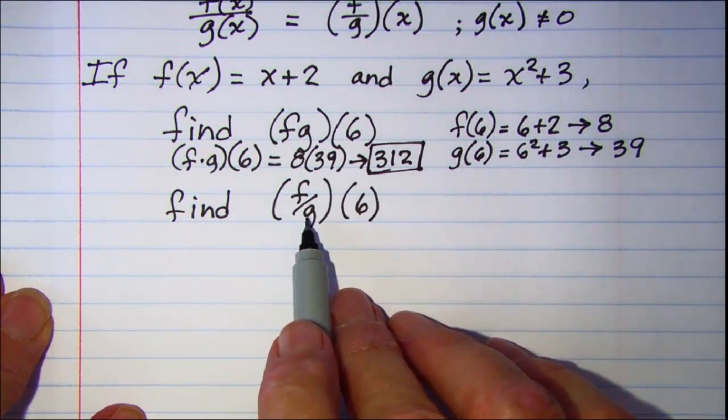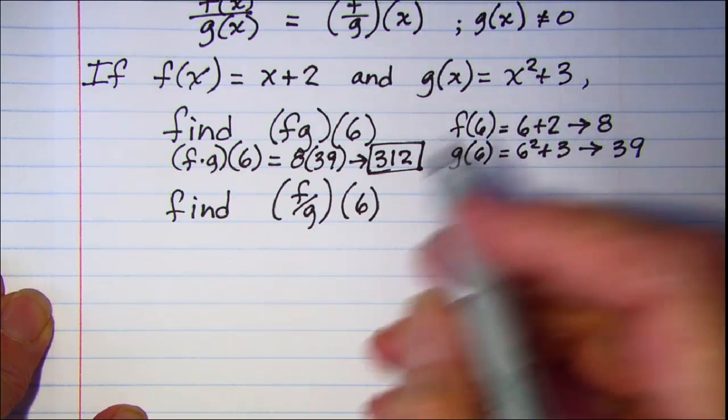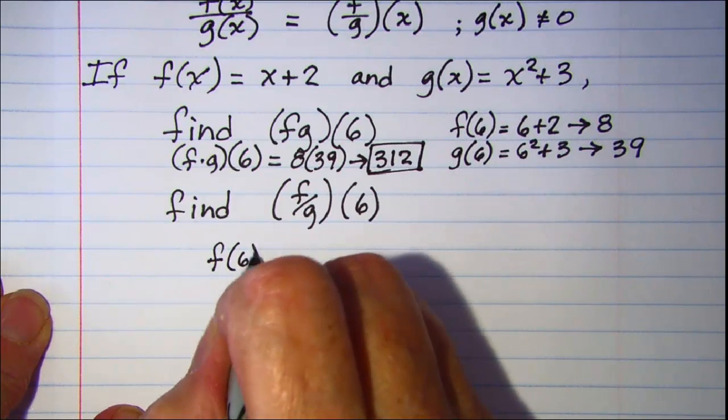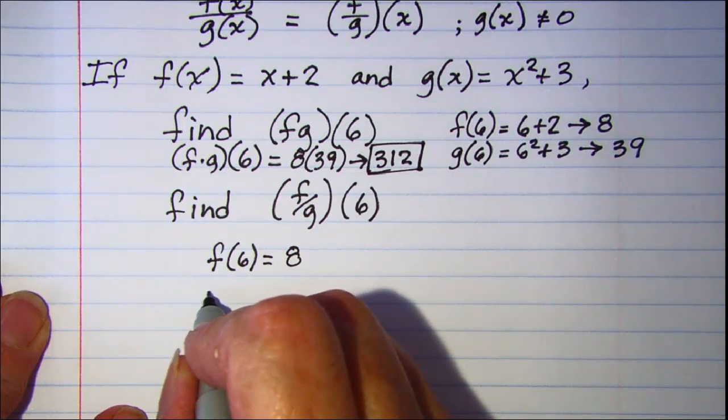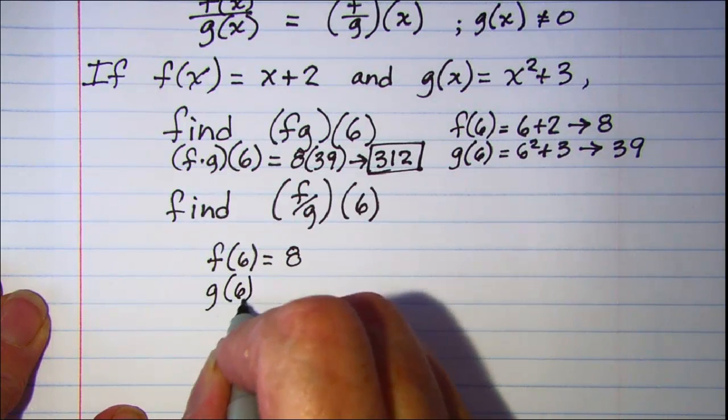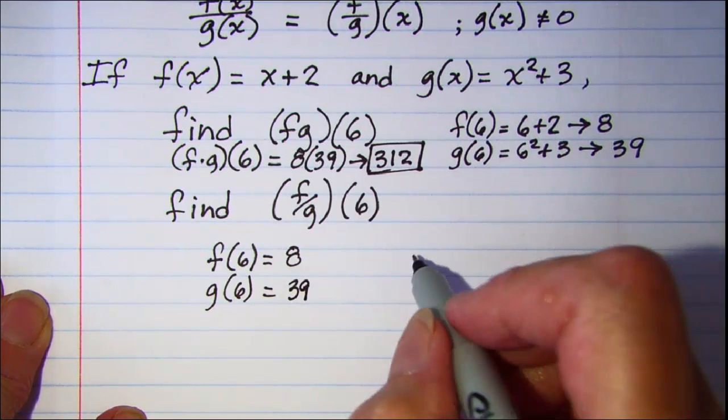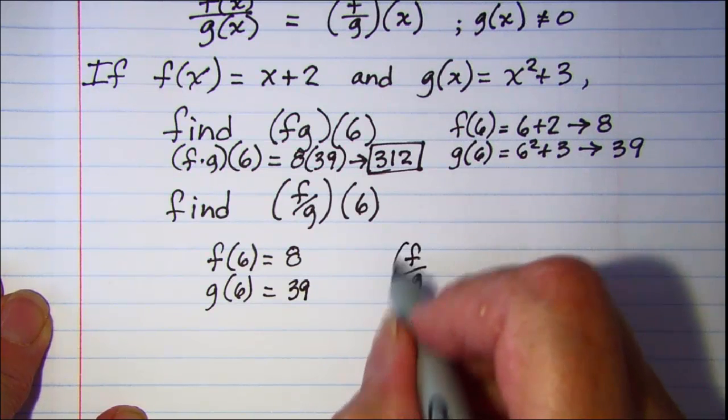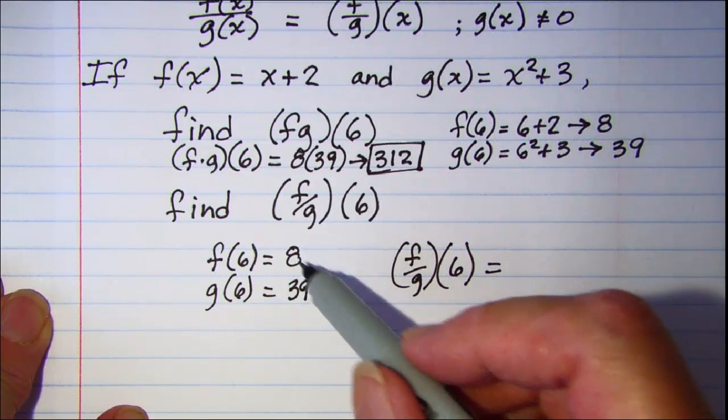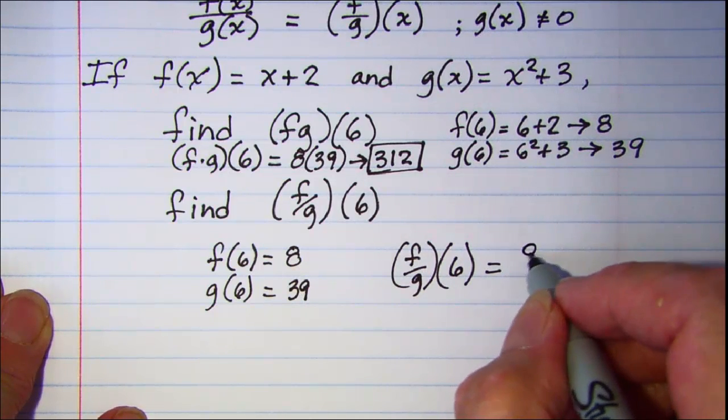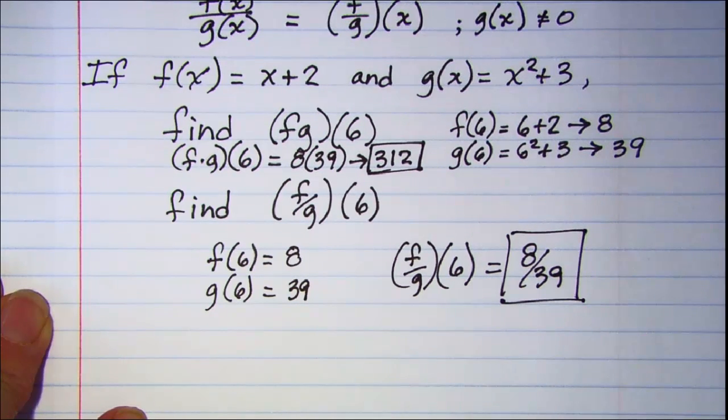For (f/g)(6), again we have found f(6). We know that f(6) is 8 and we know that g(6) is 39. So (f/g)(6) will equal 8/39. Now this fraction cannot be simplified any, so that is our product.